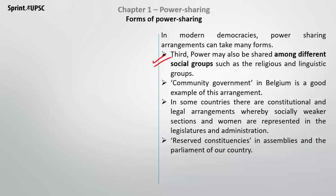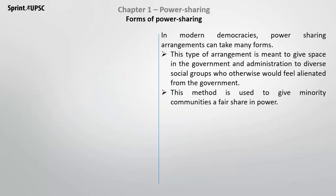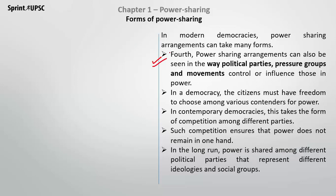The third form: power is shared among different social groups, such as religious or linguistic groups. Belgium's community government is the best example of this. In some countries there are constitutional and legal arrangements where weaker sections or women are given special powers. In India, we have a reservation system — reservations for SC and ST communities in the central government, and reservations for women in Panchayati Raj institutions and urban local body elections. There are reserved constituencies in assemblies and parliament. This arrangement is made so that if there is great diversity and a minority community exists, it gets a fair chance to share power.